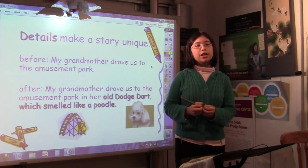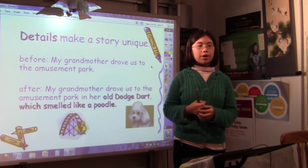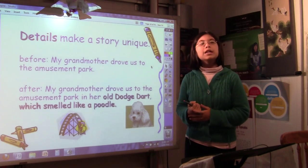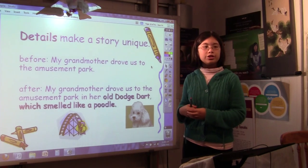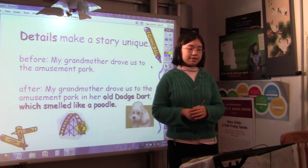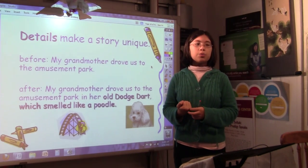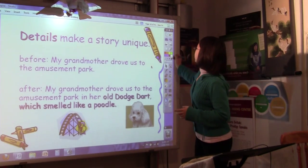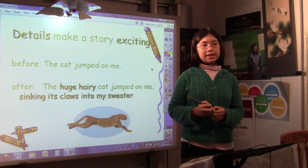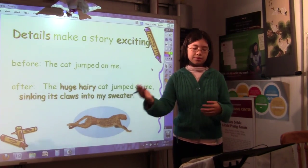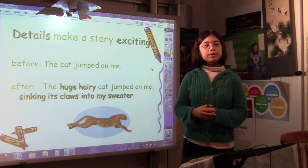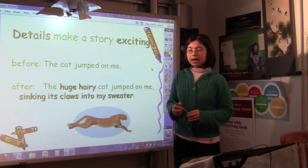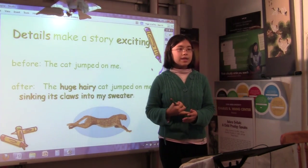Details make a story unique. Before, you could say something like, my grandmother drove us to the amusement park, the after version. A lot of people can get their grandparents or a family member to drive them to the amusement park. What if I said, my grandmother drove us to the amusement park in our old Dodge Dart, which smelled like a poodle. Each one of you and your families has something unique, something special. So bringing those up when you're adding details can also set your story apart, make it interesting and different. And details make a story exciting. You might say something like, the cat jumped on me. So again, it gets the point across. It's a little bit ordinary. But afterwards, you could say something like, the huge hairy cat jumped on me, sinking its claws in my sweater. So you see how there are many reasons why you might want to add details, whether to make it exciting, unique, to give a story life.